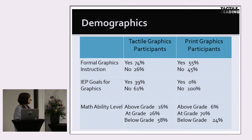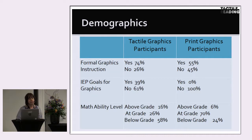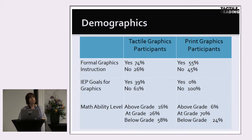The demographic form asked teachers to rate students on various things. The first was formal graphics instruction, then whether students had goals on their individualized education plan specifically relating to tactile graphics, and what their math ability level was. Looking at the tactile graphics column, about 74% were getting some level of formal graphics instruction from their teachers. However, only about 40% had specific goals related to that in their educational programs, and 58% were rated by their teachers as being below grade level in math.